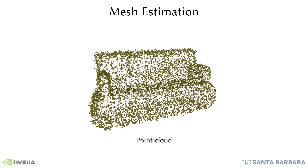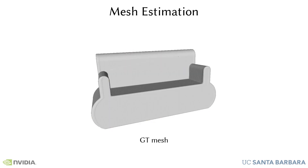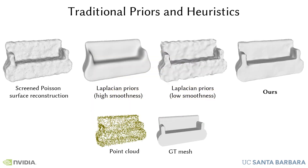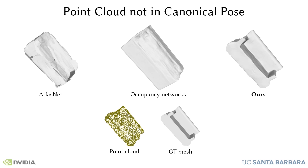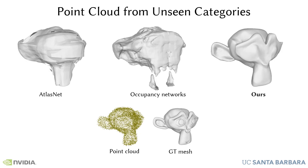Estimating an underlying mesh from a sparse and noisy point cloud requires additional priors. Traditional mesh reconstruction approaches use hand-crafted priors like smoothness, but introduce a tradeoff between overly smooth and still noisy results. Existing deep learning approaches learn priors at the object level and produce plausible results in the presence of noise and sparsity. However, they fail to generalize when the point cloud is in a pose different from the one used in training, and also fail to generalize to unseen categories.